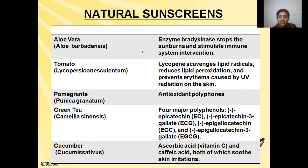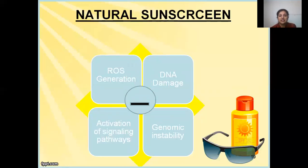Natural sunscreen agents are many; here is a brief comprehensive list. Aloe vera, obtained from Aloe barbadensis, has the enzyme bradykinase which stops sunburn and stimulates immune system intervention. Tomato contains lycopene which scavenges lipid radicals, reduces lipid peroxidation, and prevents erythema caused by UV radiation. Pomegranate has antioxidant polyphenols. Green tea has four major polyphenols: epicatechin, epicatechin-3-gallate (ECG), epigallocatechin (EGC), and epigallocatechin-3-gallate (EGCG). Cucumber has ascorbic acid (vitamin C) and caffeic acid which soothe skin irritation. Natural sunscreen agents inhibit ROS generation, DNA damage, genomic instability, and activation of signaling pathways.